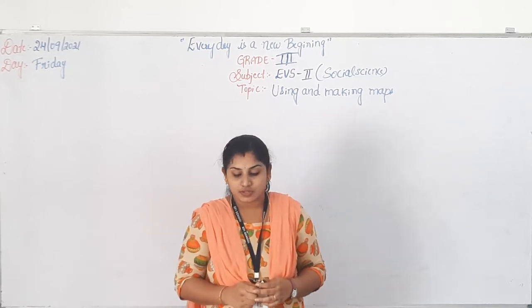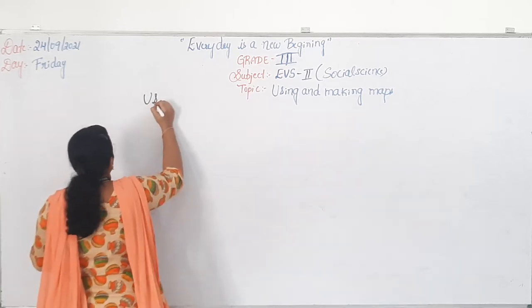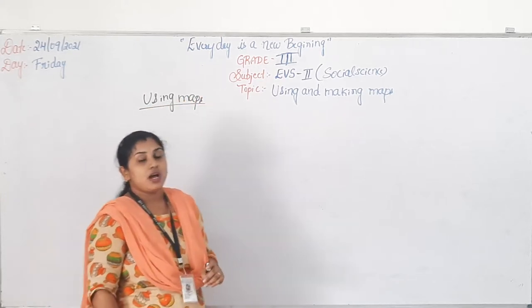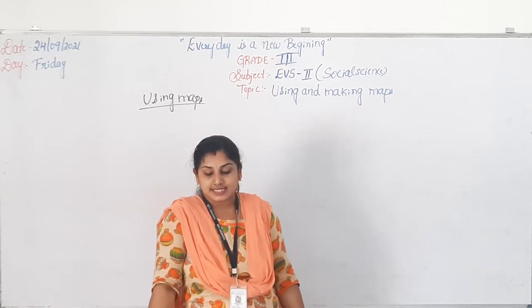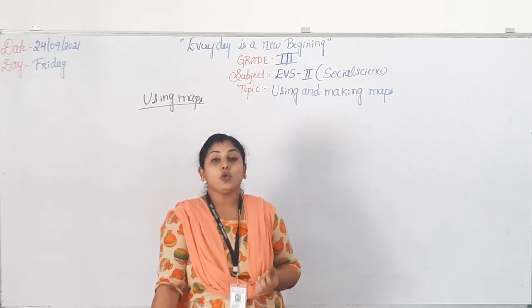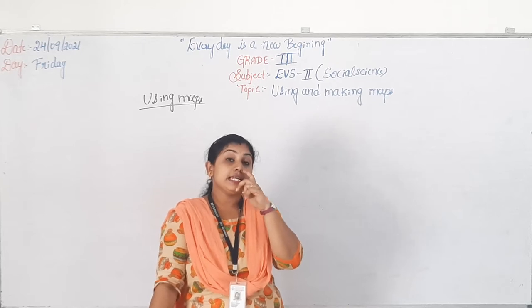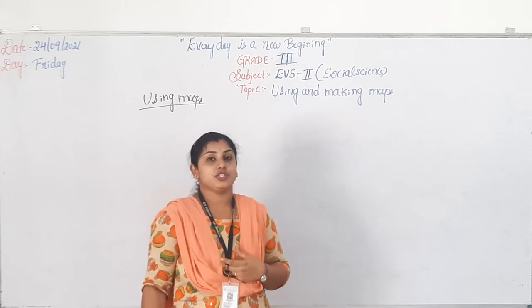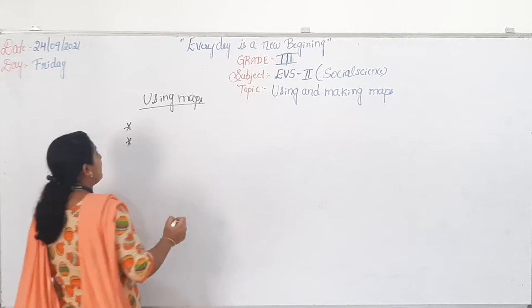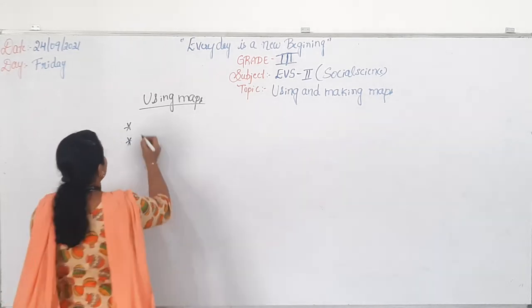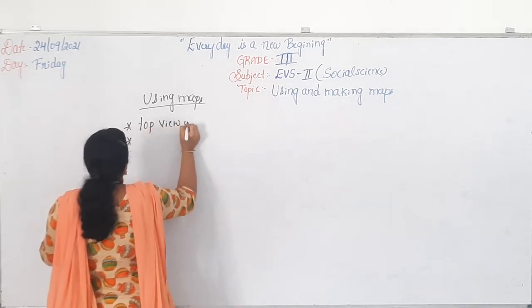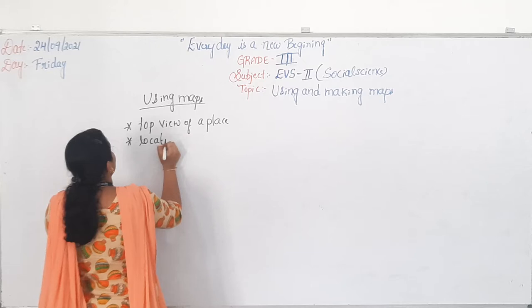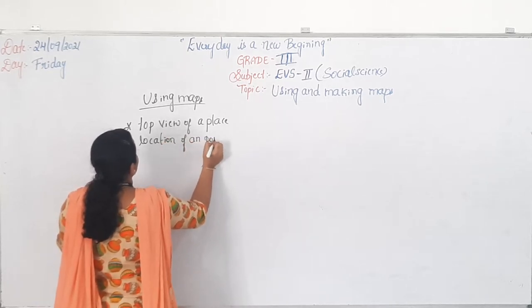Today we are going to read about using maps. So how we are going to use the maps? From the maps — we look at a place from above to make a map, isn't it? So a map shows the top view of the place, and a map also helps us to locate our position. So the map mentions two things: it shows the top view of a place, and next, the location or position.